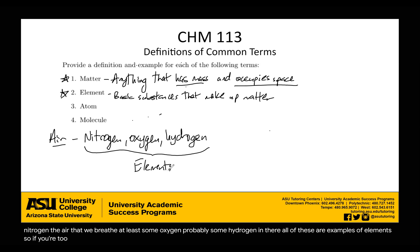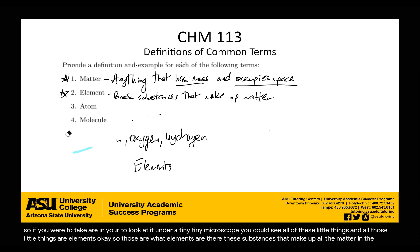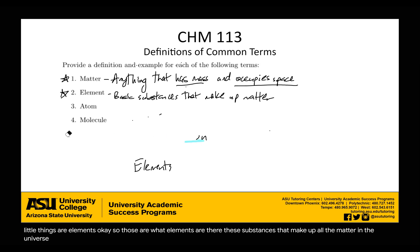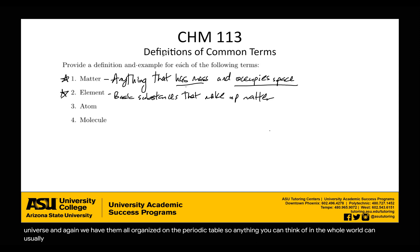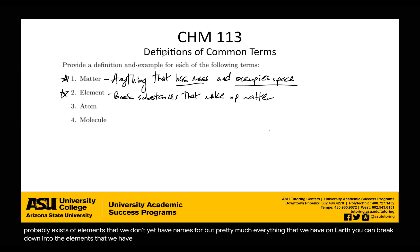If you were to take air and look at it under a tiny microscope, you would see all of these little things, and all those little things are elements. They're the substances that make up all the matter in the universe, and we have them all organized on the periodic table. Anything you can think of in the whole world can usually be broken down into one of those elements. Pretty much everything on Earth can be broken down into the elements on the periodic table.